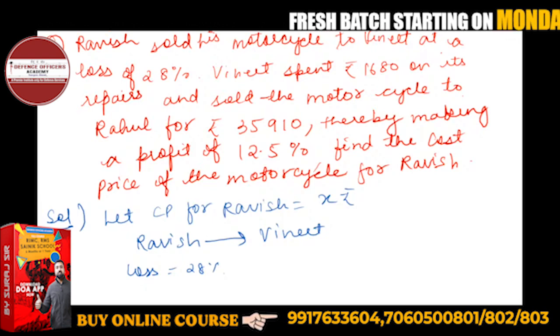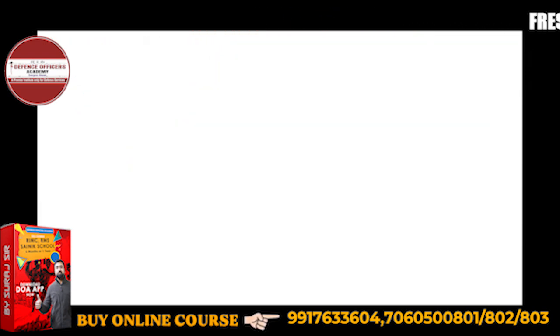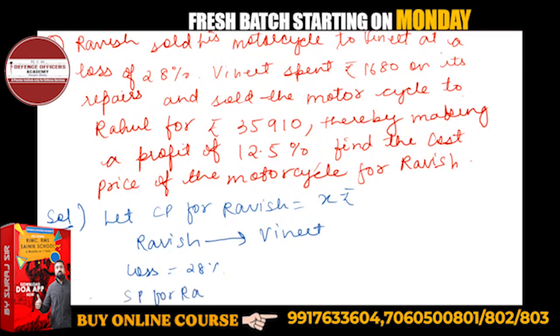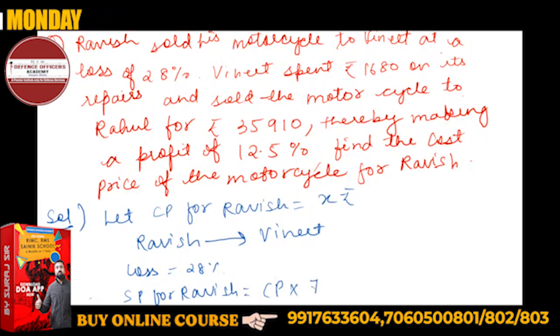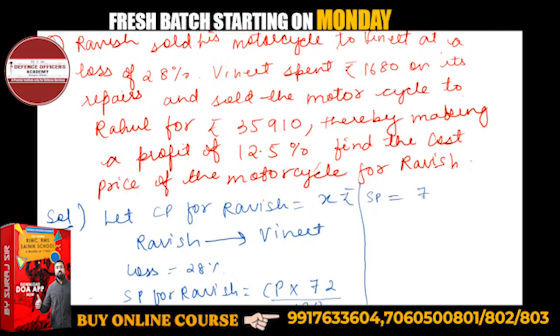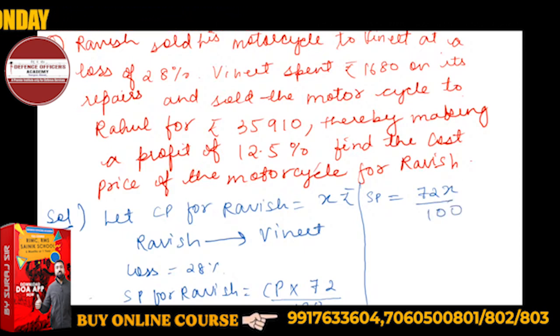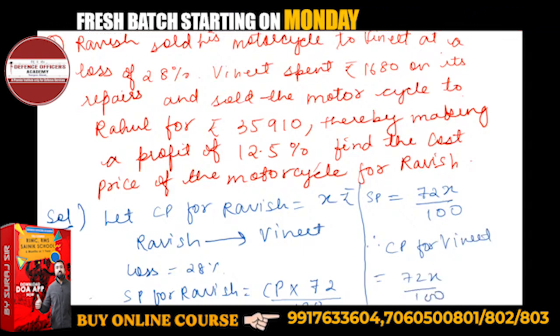That will be nothing but CP for Vineet. We know the formula. Therefore SP for Ravish, you know SP is a function of CP. 28% loss, so it's 72 upon 100. So SP for Ravish will be nothing but 72X upon 100. Now this SP is nothing but CP for Vineet. Therefore, CP for Vineet is nothing but 72X by 100 because he has paid so much.